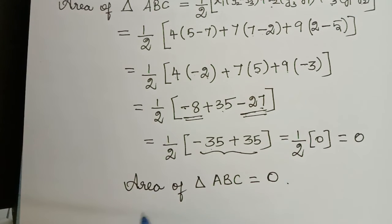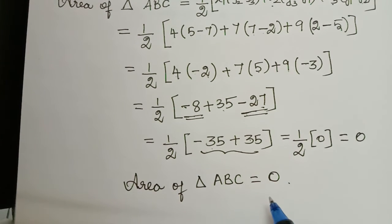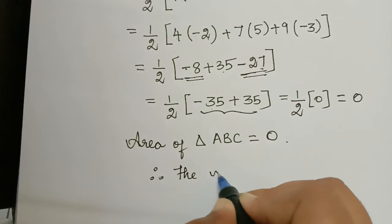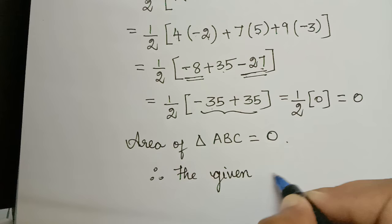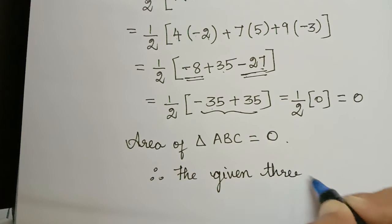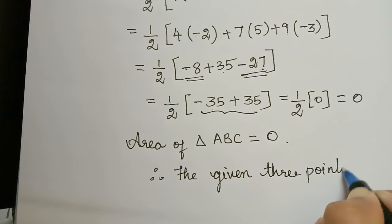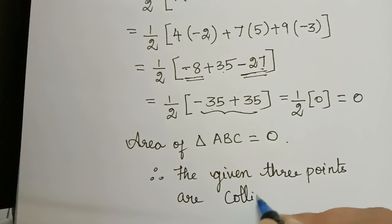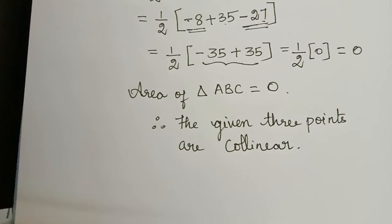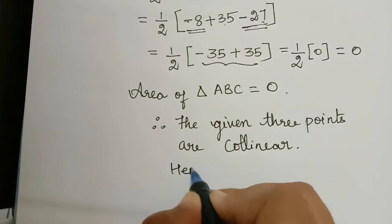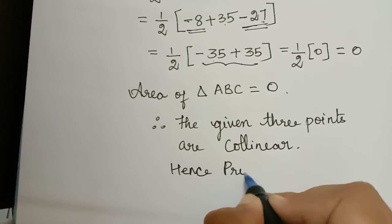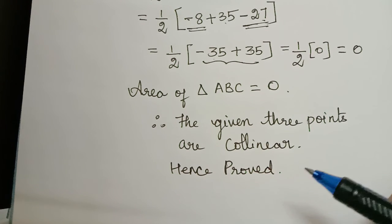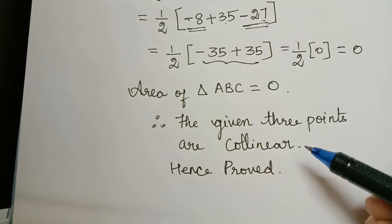Therefore the area of triangle ABC is equal to zero, and hence we have proved that the three points are collinear. So the given three points are collinear — we have proved the required result. Hence proved. Hope you have understood this concept of three points being collinear. Thank you.